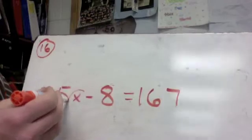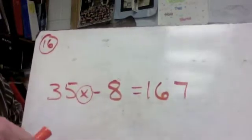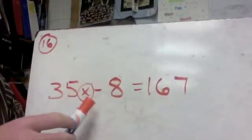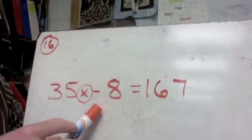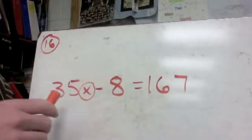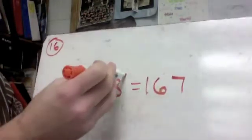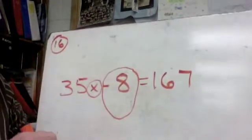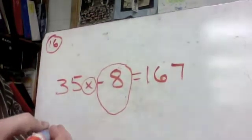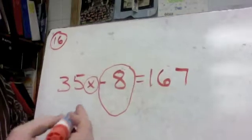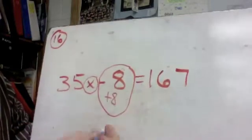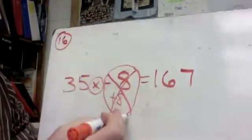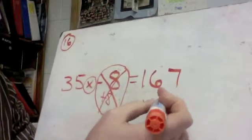Our goal, get x by itself. We have a times 35 here, and a minus 8 here. So we want to keep x where it's at, so we've got to move everything else around. So we'll start with any pluses and minuses that we have here that are going to be add or subtract. So we have minus 8, so inverse operation, we have plus 8. It's going to cancel that out. So we're just going to add 8 over here.